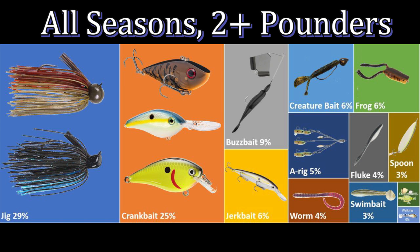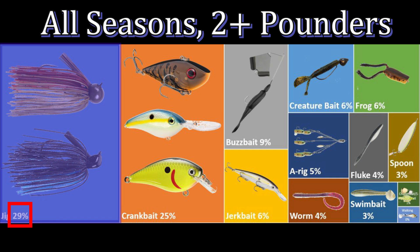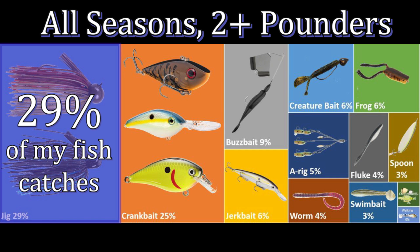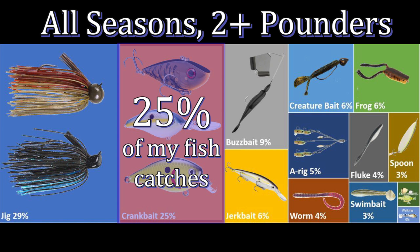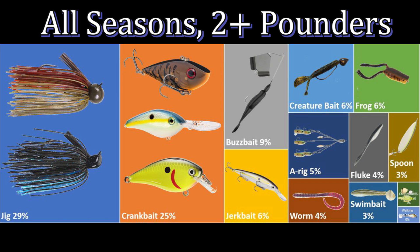I decided to visualize this data using a heat map. For those of you who don't work in data analytics, let me explain: the colorful rectangles on this graph each represent a bait, and their combined area equals 100%. The rectangle labeled 'jig' has 29% next to it, meaning 29% of the fish I caught across all my YouTube videos were on a jig, and 25% came on a crankbait, 9% on a buzzbait, 6% on a jerkbait, and so forth.